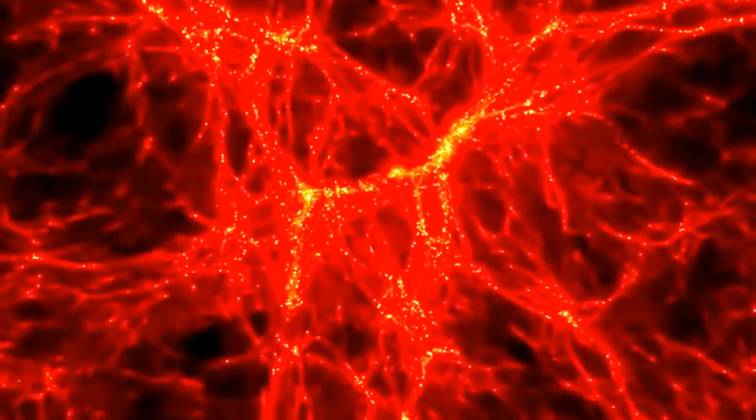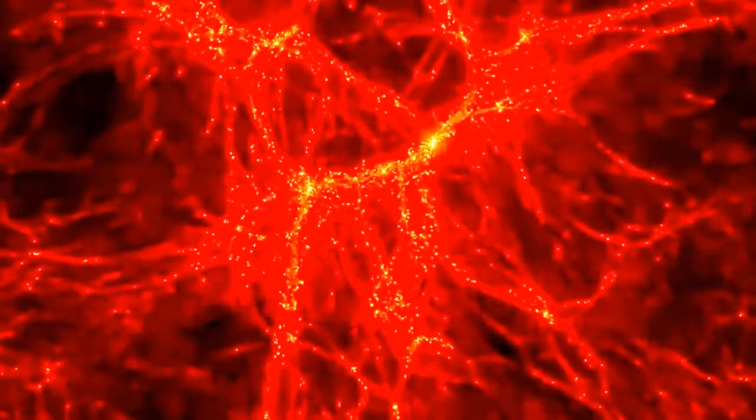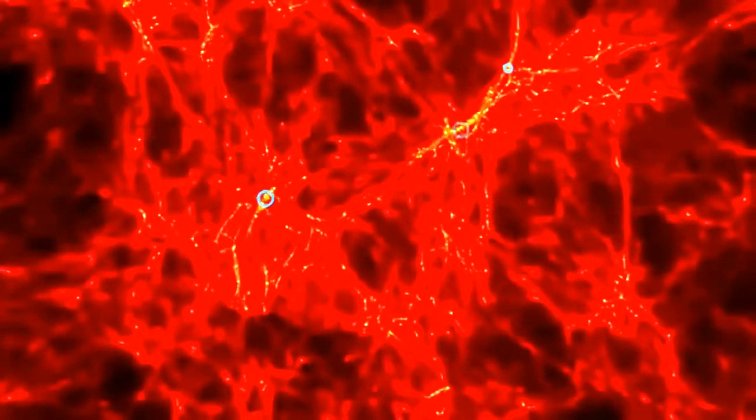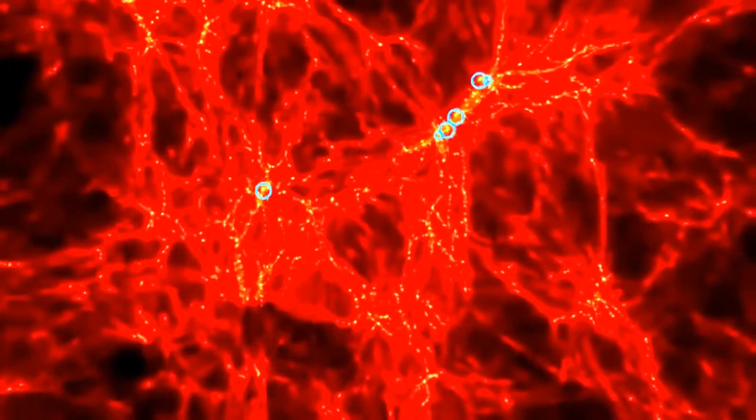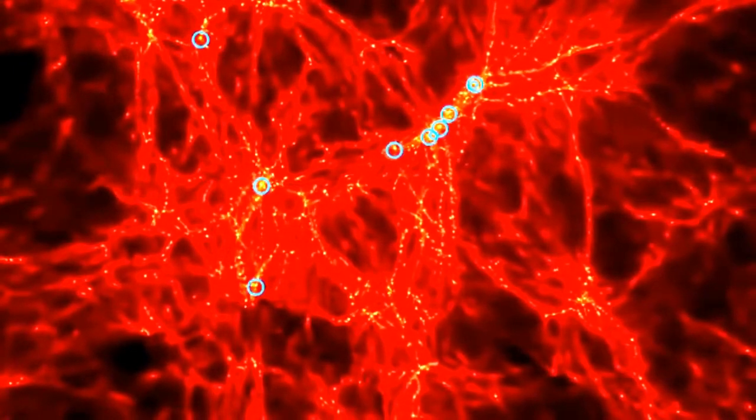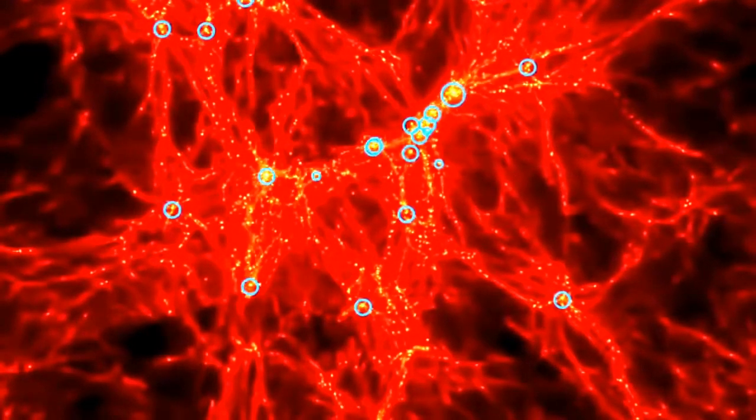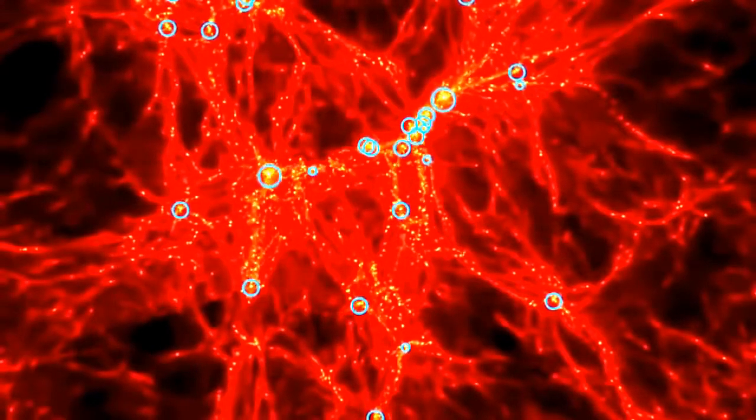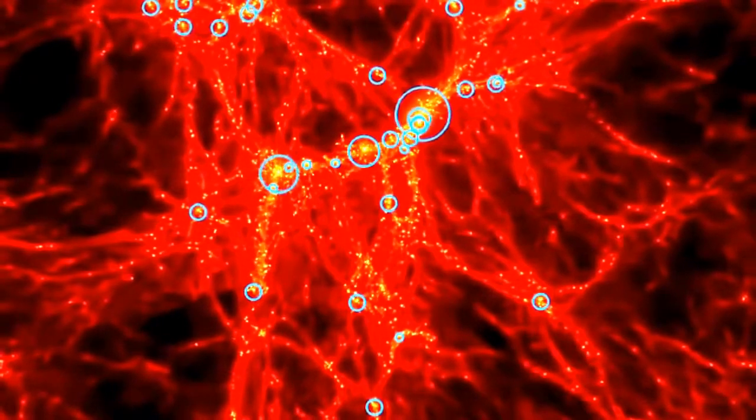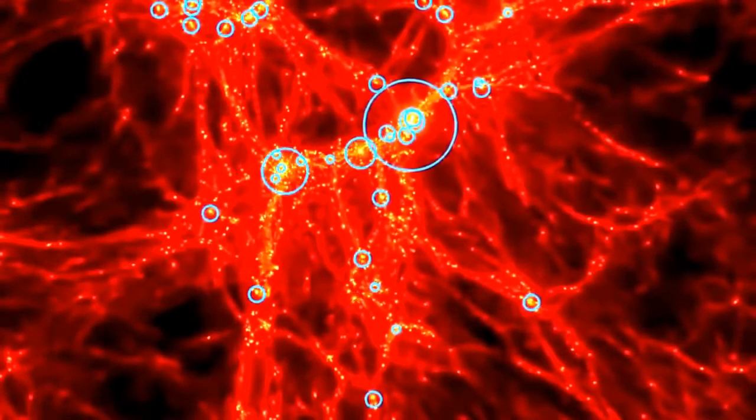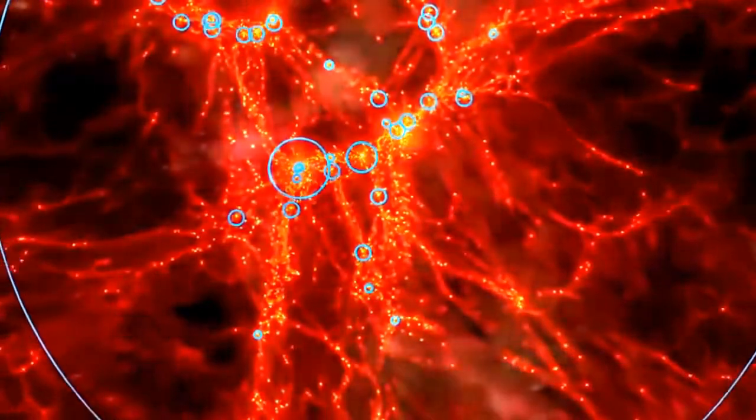The result? An intricate cosmic web with gravity drawing matter into filaments and knots, like a vast tangle of interconnected spider's webs. Inside the densest regions is where the largest galaxies and black holes grew. Here, circles indicate the appearance of black holes deep in the data. As they gain weight, by eating up their surroundings, the circles grow larger. A few in the largest galaxies reach ultra-massive proportions, billions of times the mass of the sun.